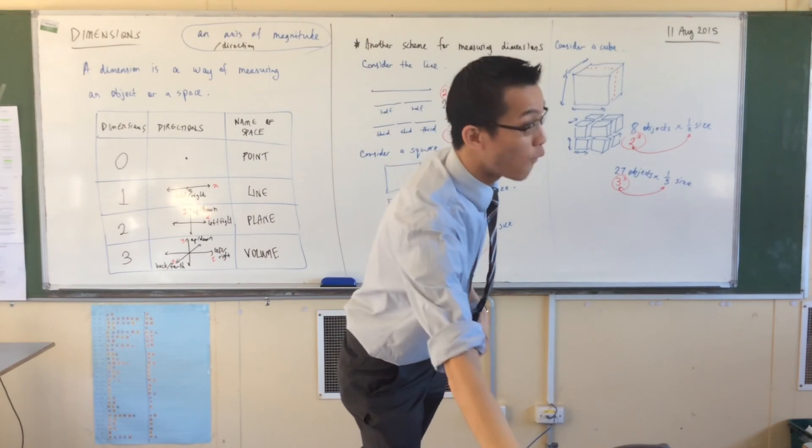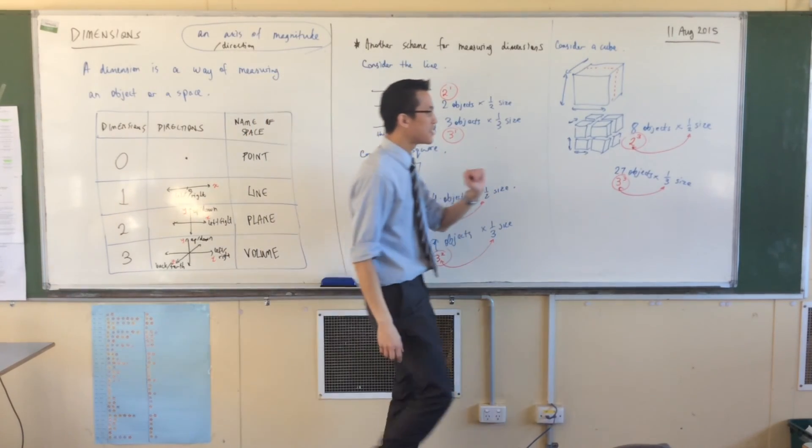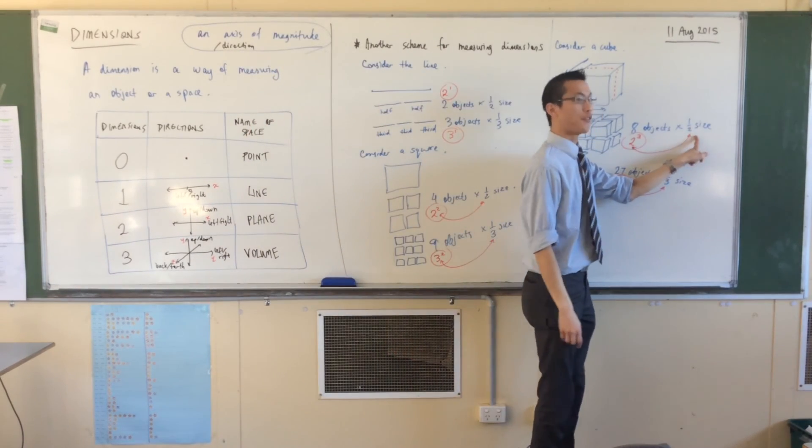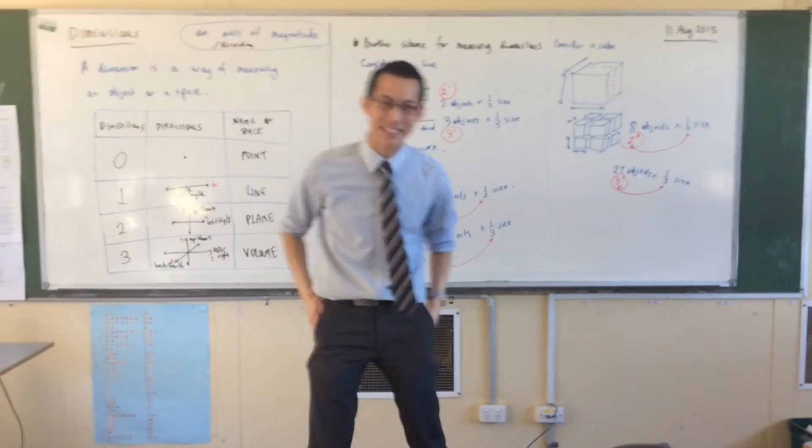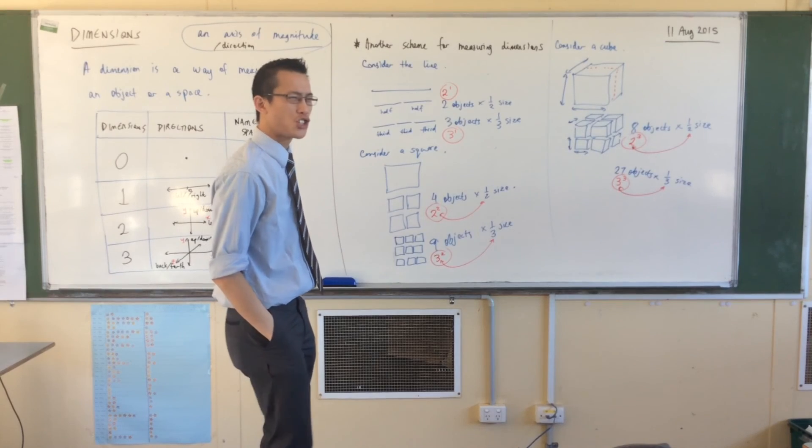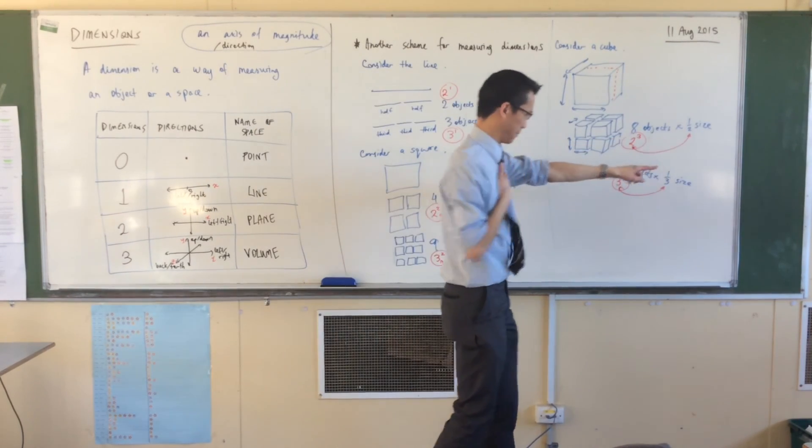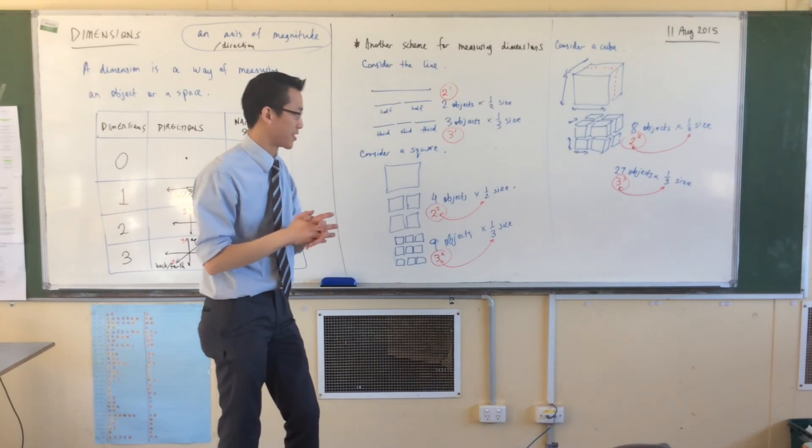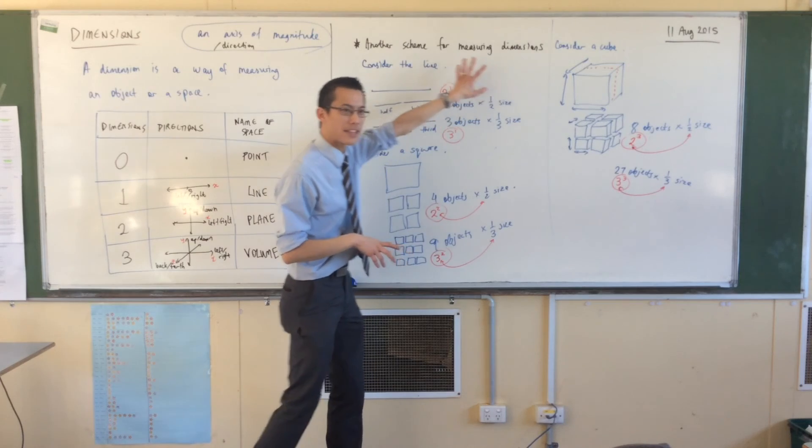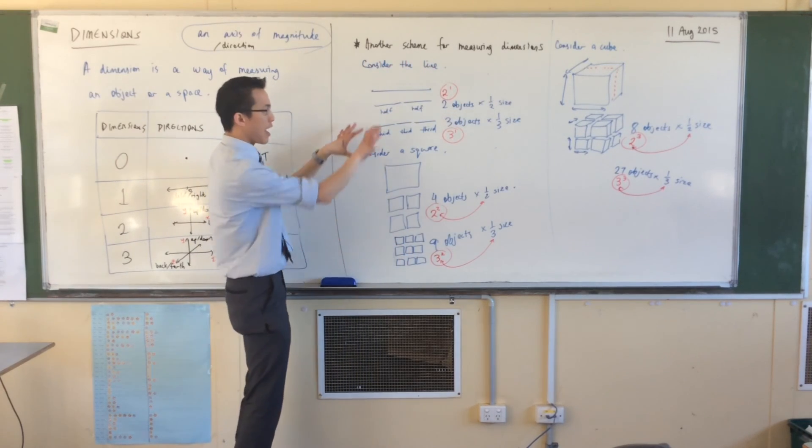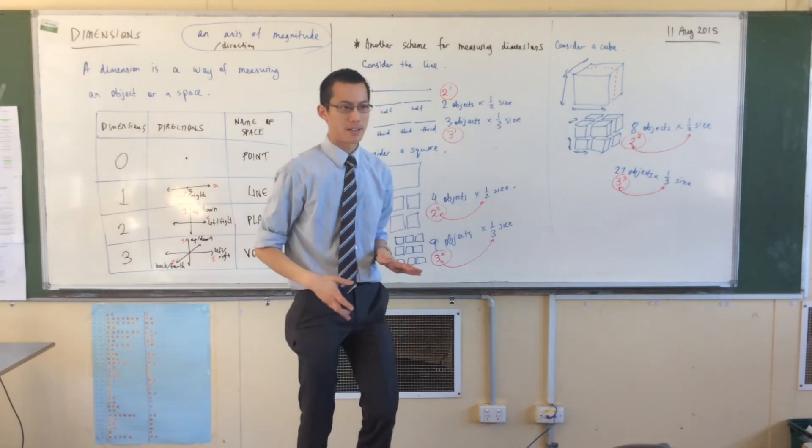So, if you could take a four-dimensional object, if you could imagine it, and divide it up into a bunch of other four-dimensional objects that were all half the size, how many would you expect to get out? You'd expect 16 smaller, half-sized, four-dimensional objects. All right. Now, this is a totally different way of thinking about dimensions, that it's about splitting the objects and seeing how many you get versus the size.